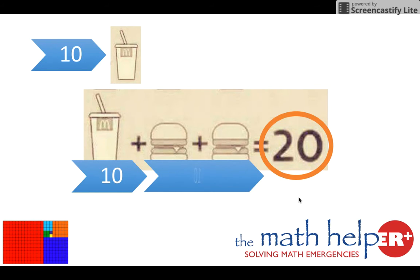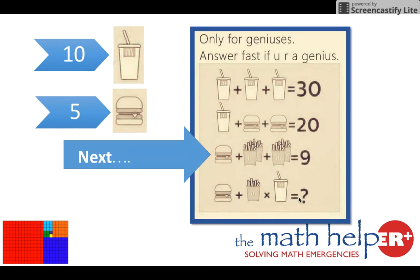We know that there's two burgers, so we're going to need five and five. This leads us to a burger being five.